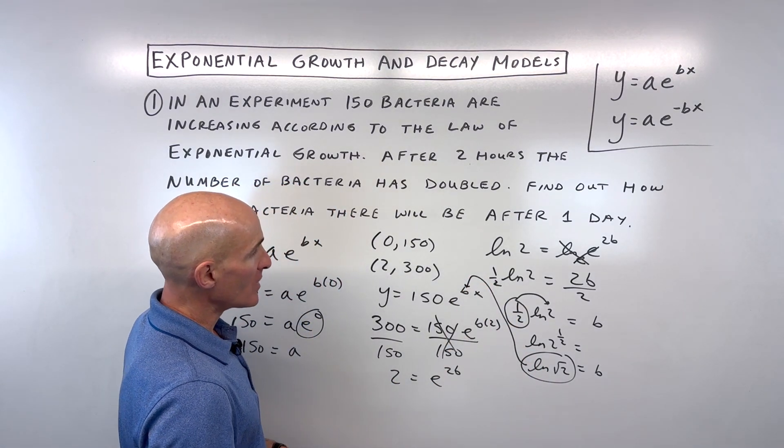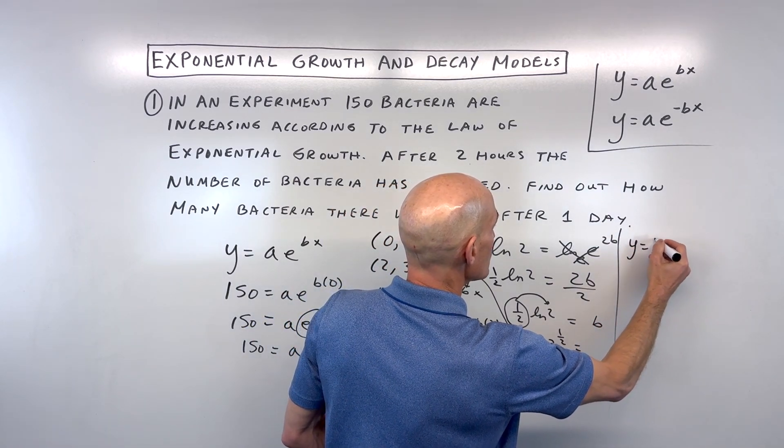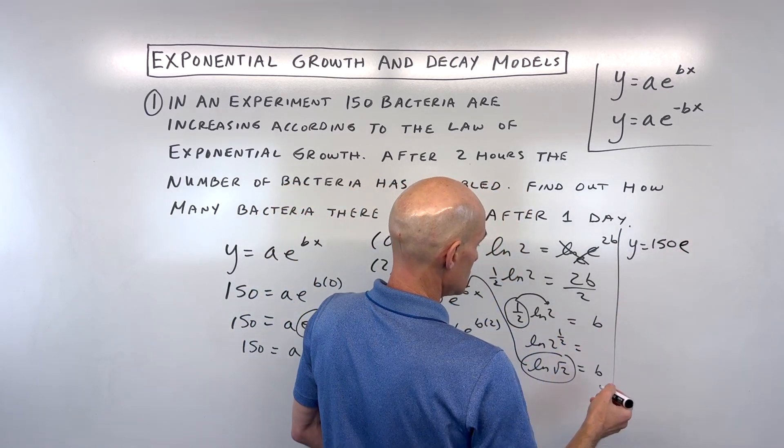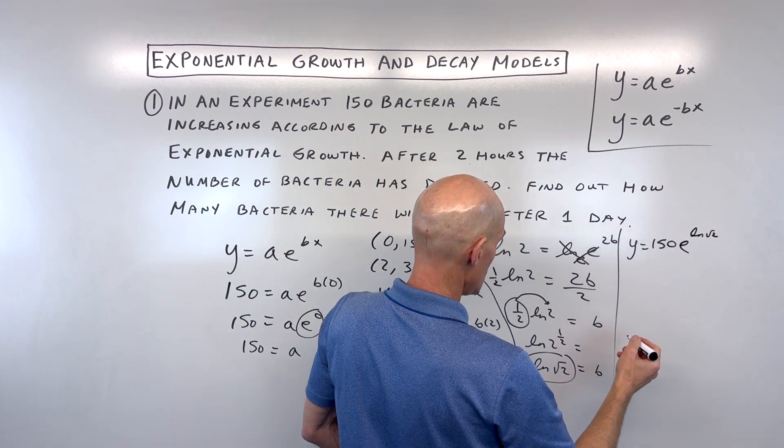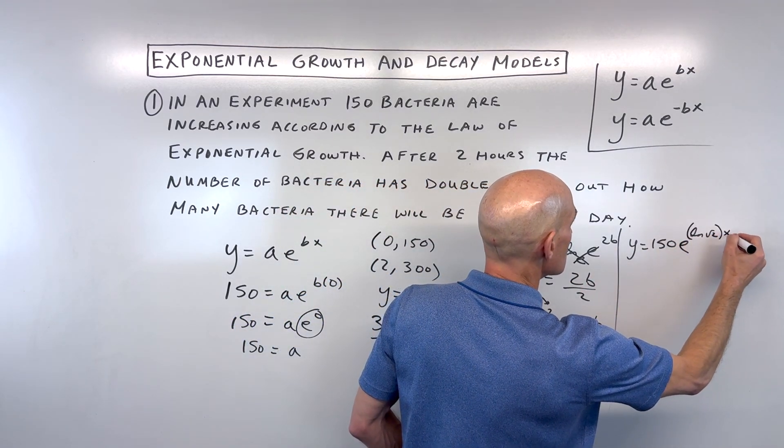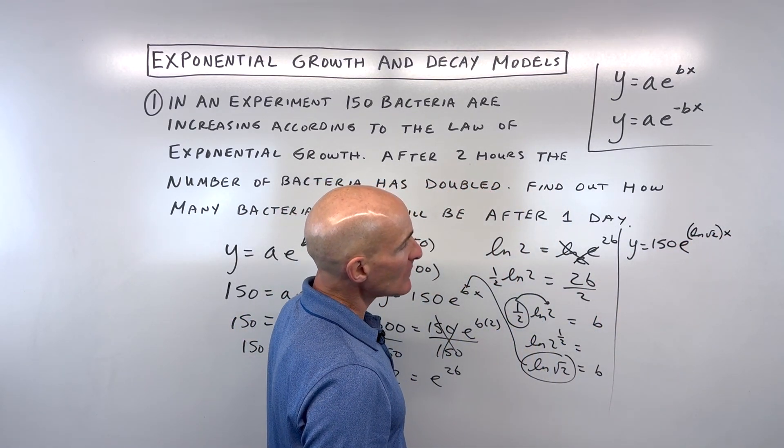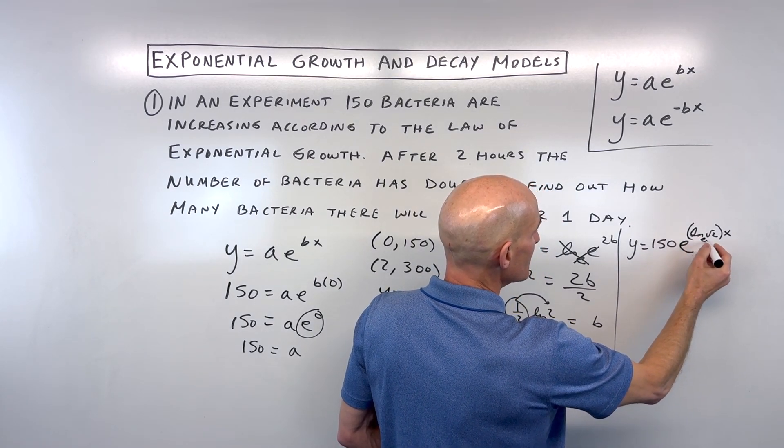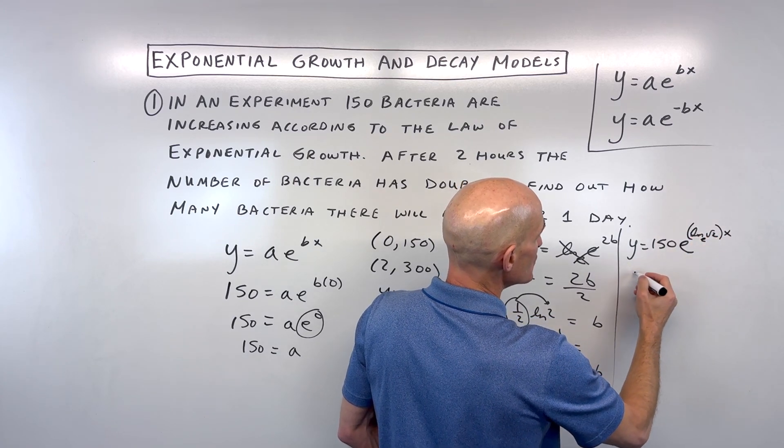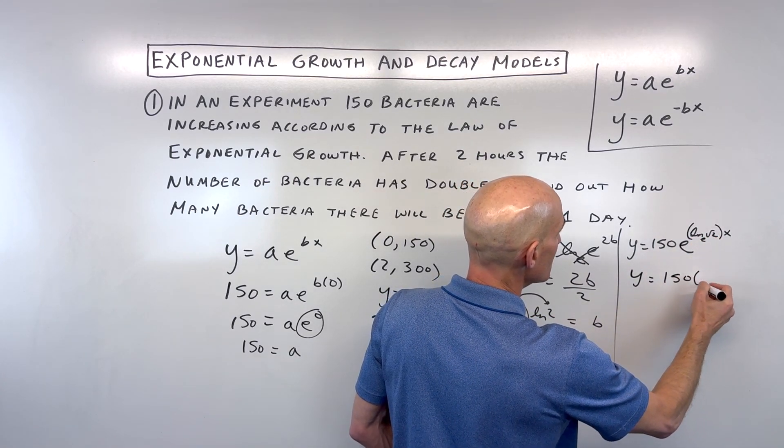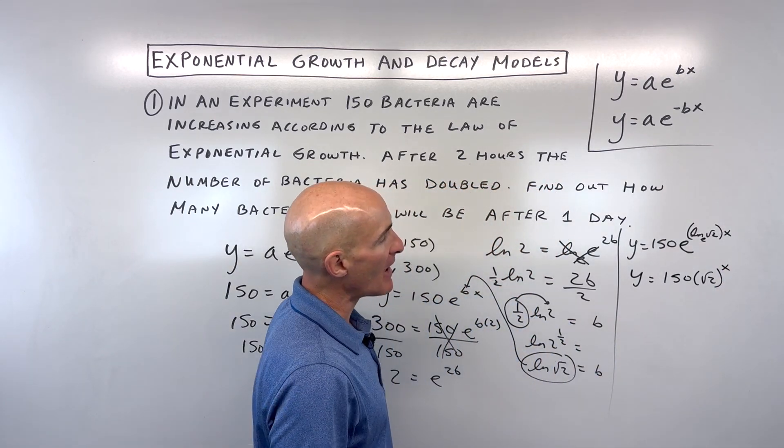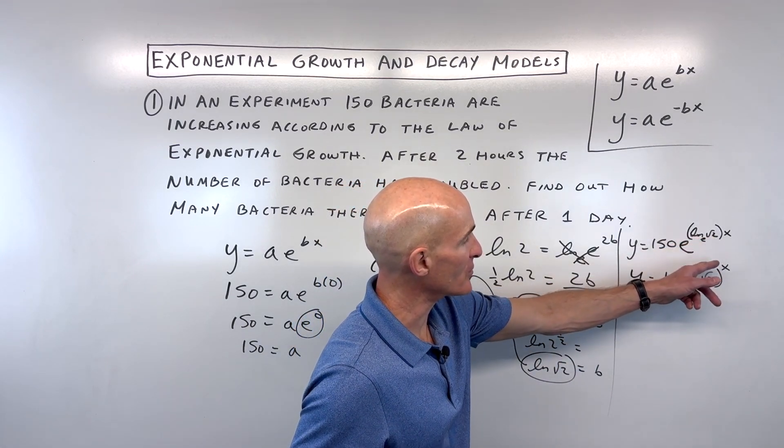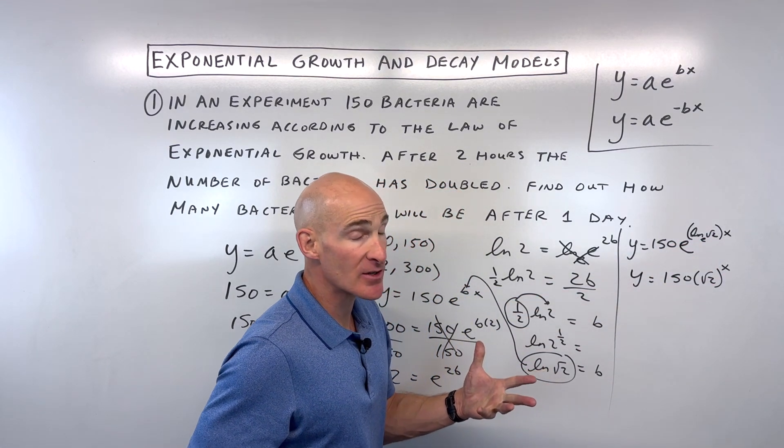So that goes in for b right here. Now our equation is y equals 150e to the natural log square root 2 times x. We can simplify this - e raised to the natural log are inverses of one another, so this gives us y equals 150 square root of 2 to the x power.